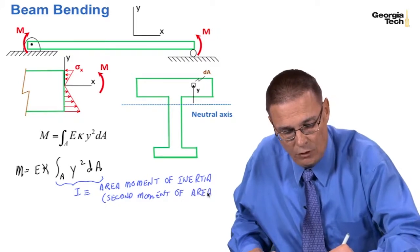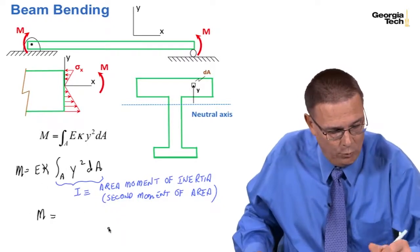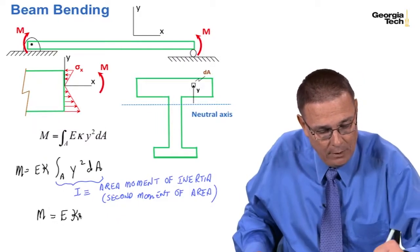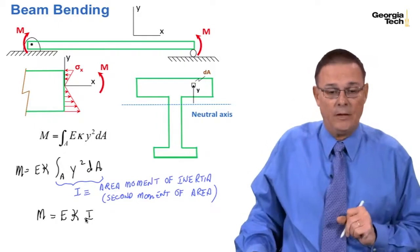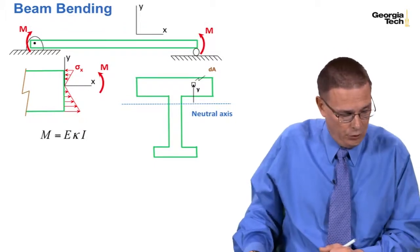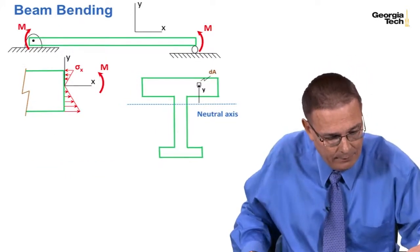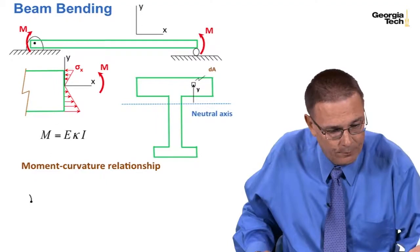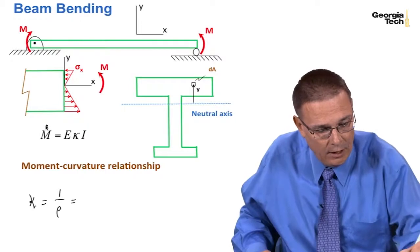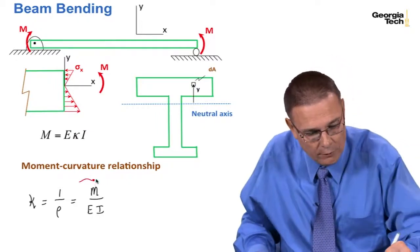We can now write this in shorthand: M, the moment, equals E — Young's modulus — times kappa, the curvature, times I. So the moment-curvature relationship is: kappa equals 1 over rho, or solving for kappa, kappa equals M over (E · I). That is the moment-curvature relationship.